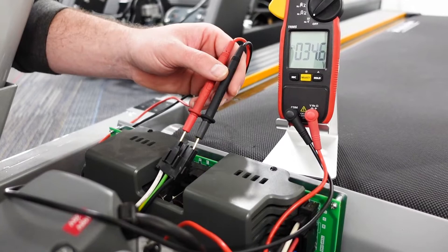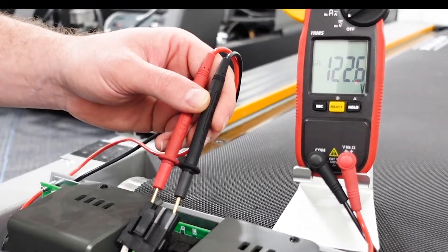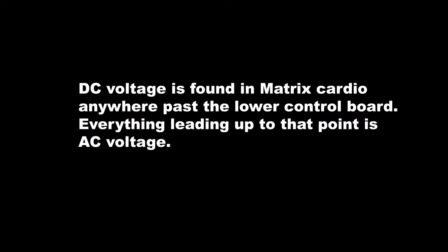Now it's time to check the volts going into the lower control board. Remember! DC voltage is found in Matrix cardio anywhere past the lower control board. Everything leading up to that point is AC voltage.